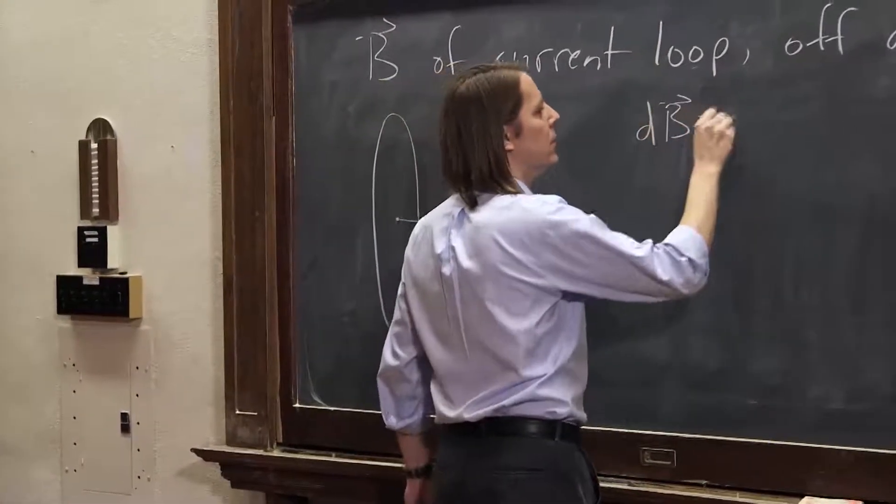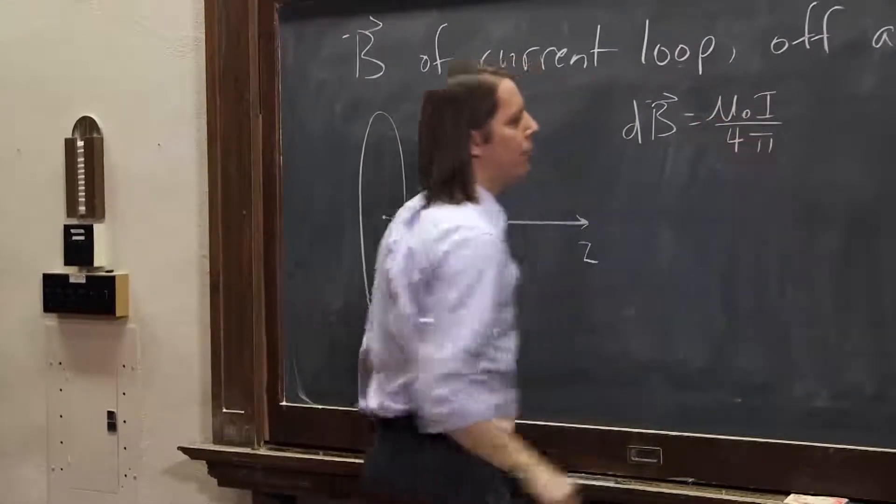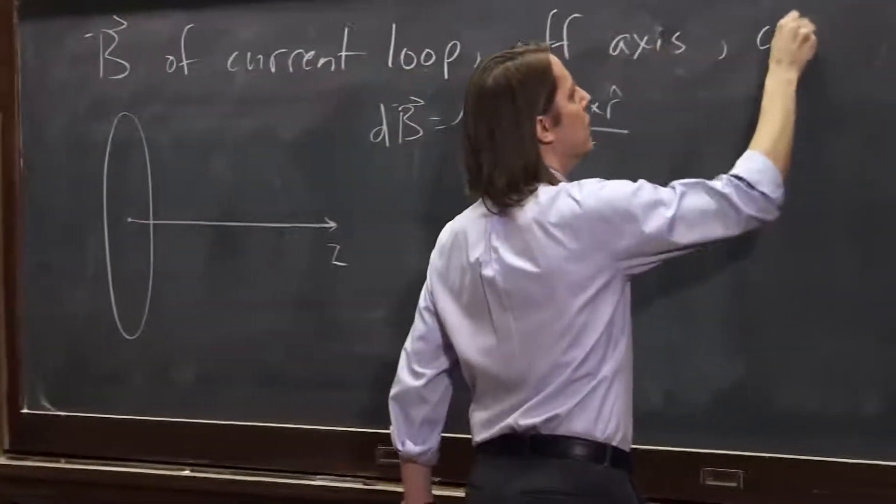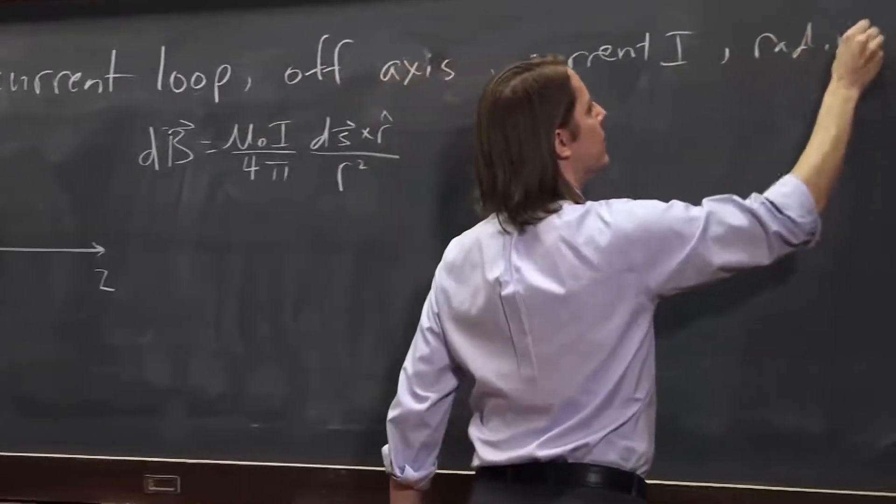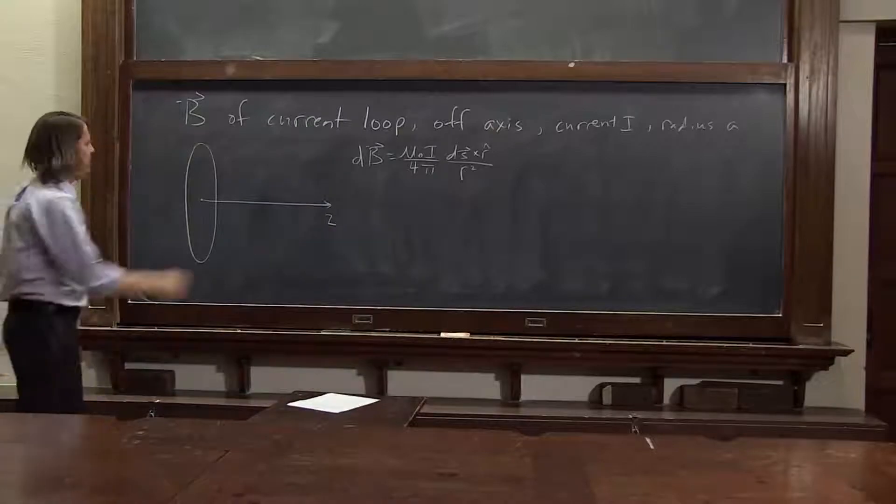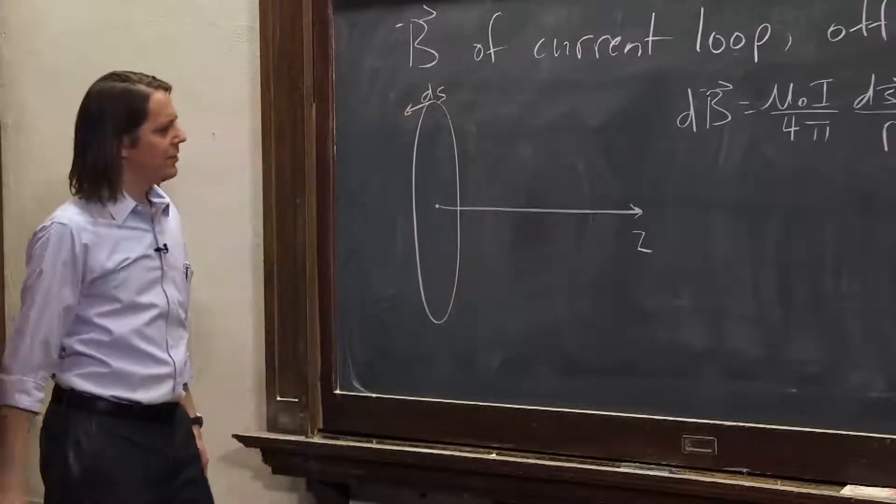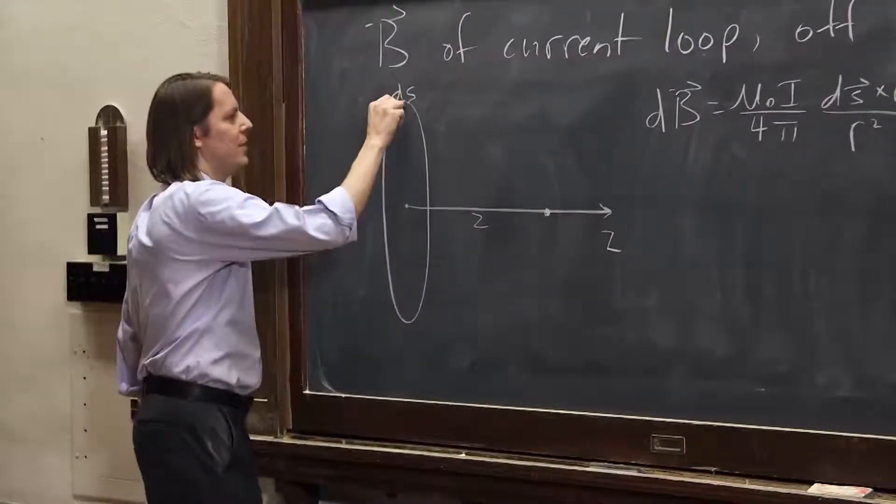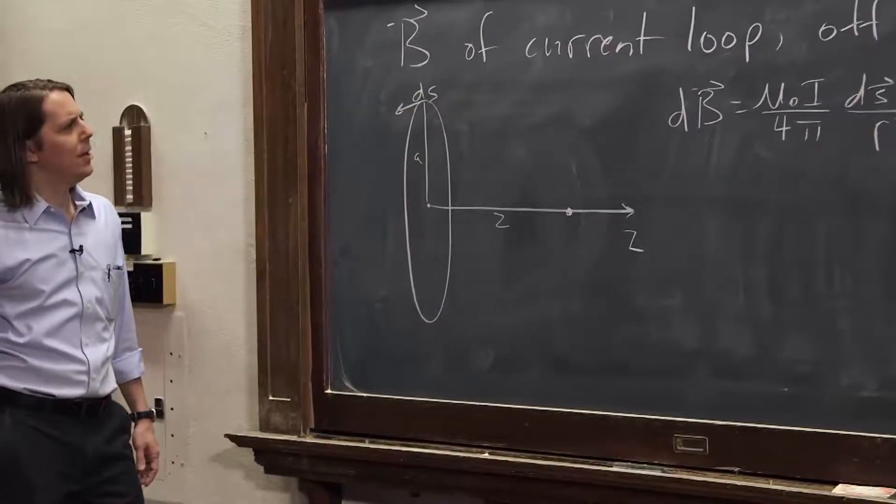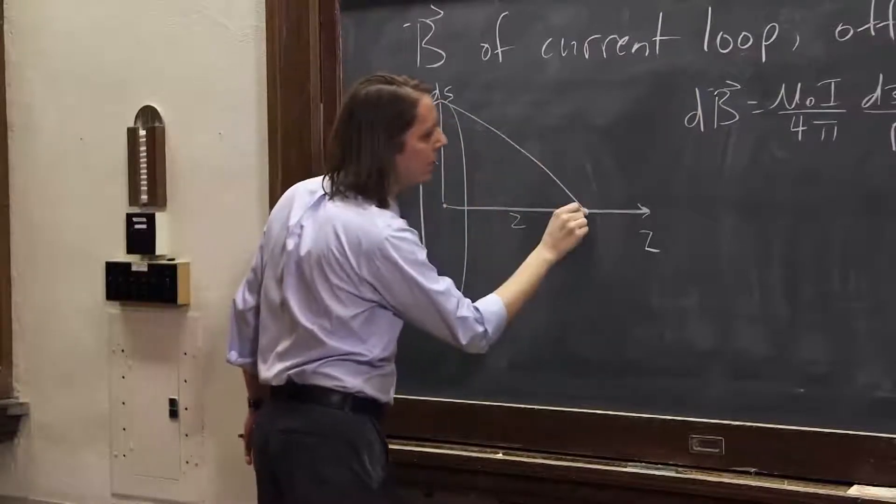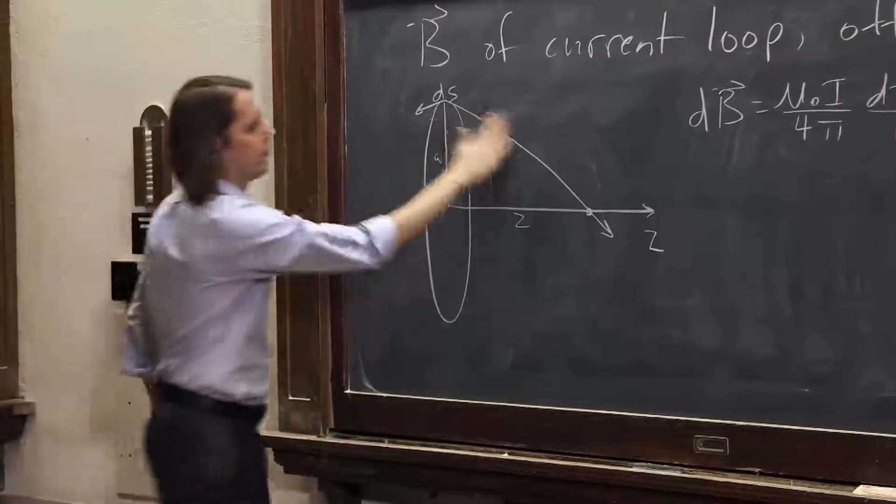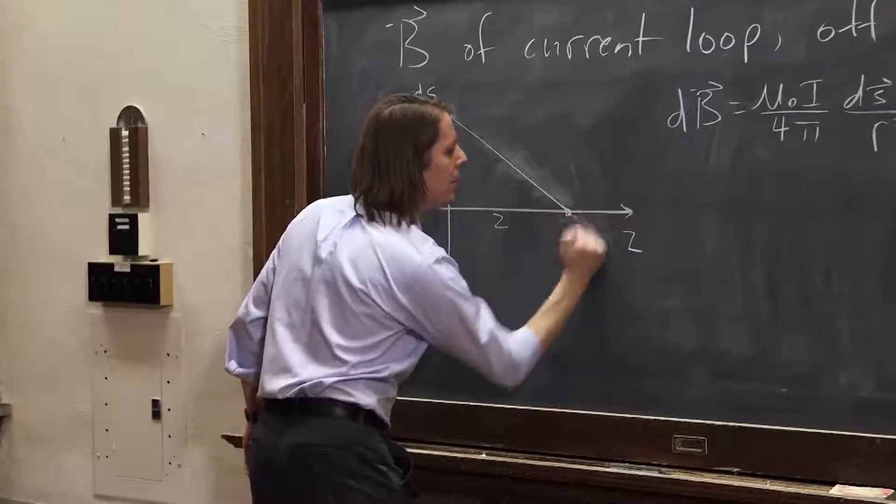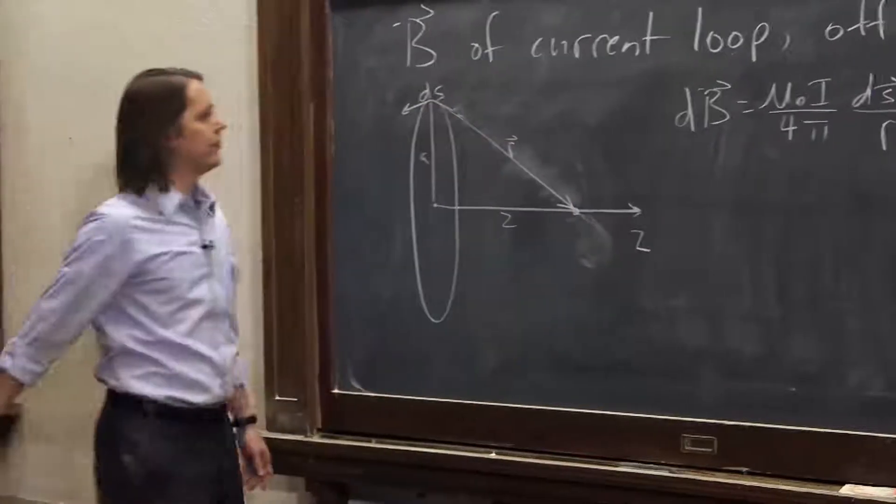Let's write our dB is mu naught I over 4 pi, dS cross r hat over r squared. And we'll assume the same thing. It has a current I and radius A. So let's imagine a dS right here on top like that. dS is like that. We want to pick a position at some distance Z from the thing. So we're at a position Z like that. And we have a radius A right there. And now our r vector is from dS this position to there. Except the line should be straight. This is horrible. dS to Z. Ooh, that's perfect. Okay. So then here, here is r. All right. There's all of our vectors.